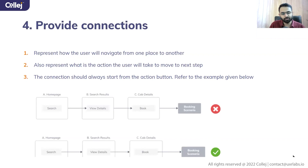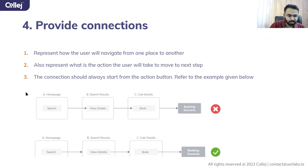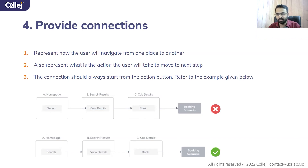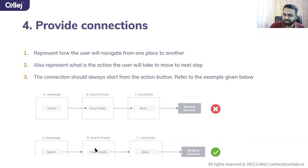Next, provide connections — you have to create a flow. When the user does a certain action, to which state are they going? You always draw a connection from a call-to-action to a screen. For example, if you're on homepage and you click on search, you go to search results. From there, if you select a particular result and click 'view details,' you go to cap details. From there you book it. Another scenario can be planned separately.